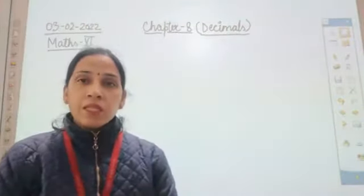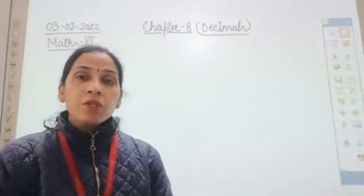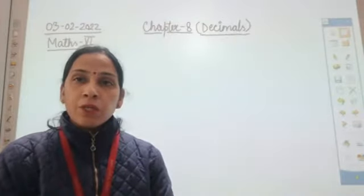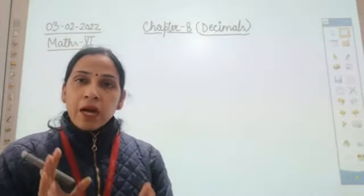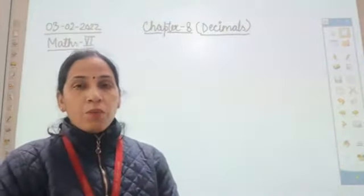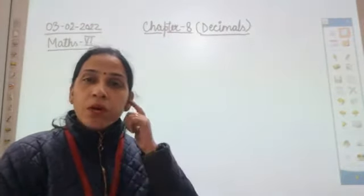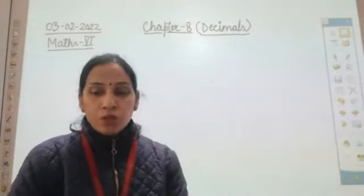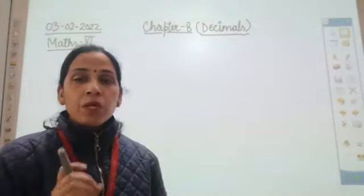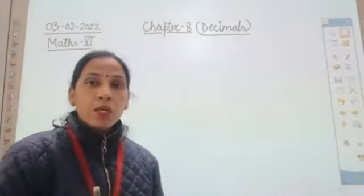You might have seen the decimal point in rupees also. In rupees, we put that point to denote paisa. Paisa is not a part of rupee, but it is denoted in fraction form, or that fraction can be converted into decimal form. So half a rupee, that is 50 paisa, can be written as 0.5 or 0.50. Whenever you have a mixed fraction, that mixed fraction is going to be represented in the form of decimal.